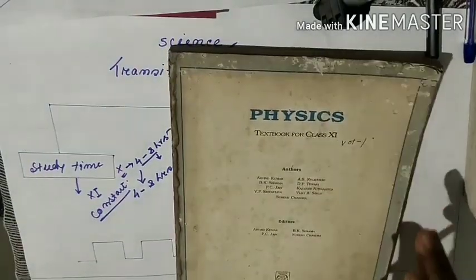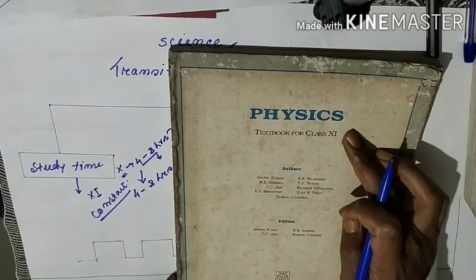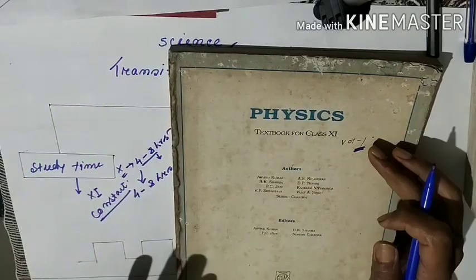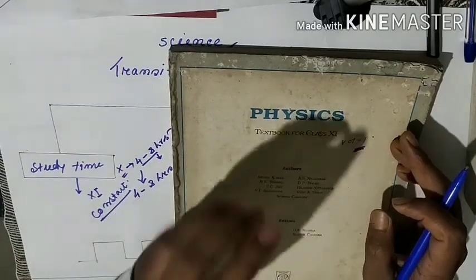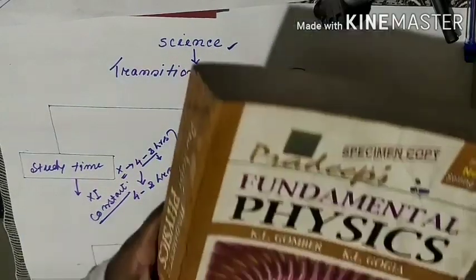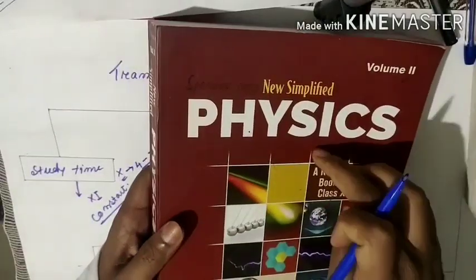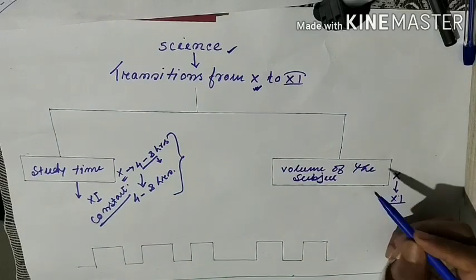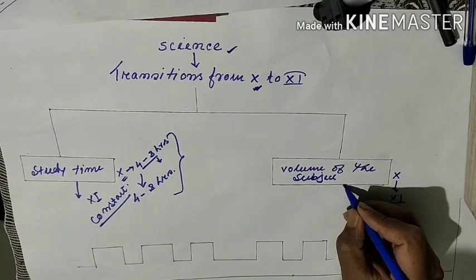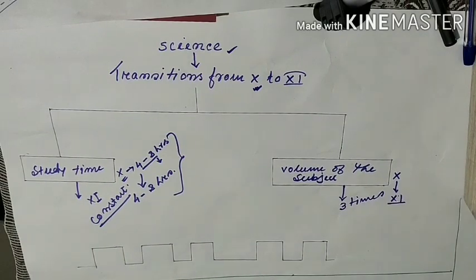Now look at another valid point - this is your volume of the subject. If you look at your class 10 and class 11, here you will see the first difference. In class 10, the science book is something like this. But here in class 11, this is only volume 1 of physics. Then volume 2 is there. Then for chemistry also volume 1, volume 2. Then for biology, then for mathematics.